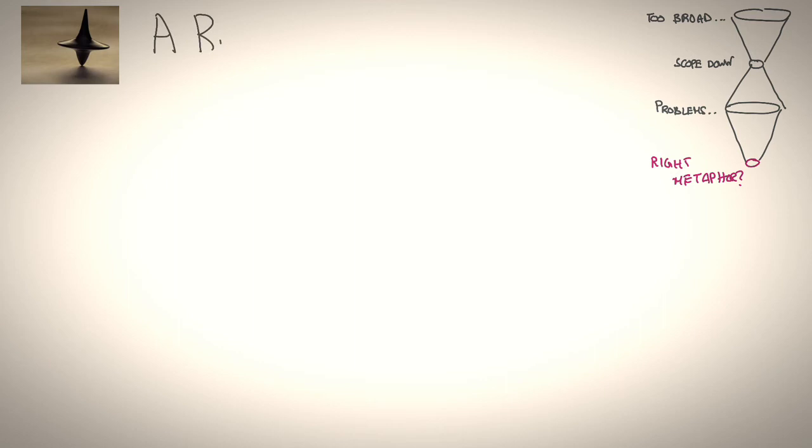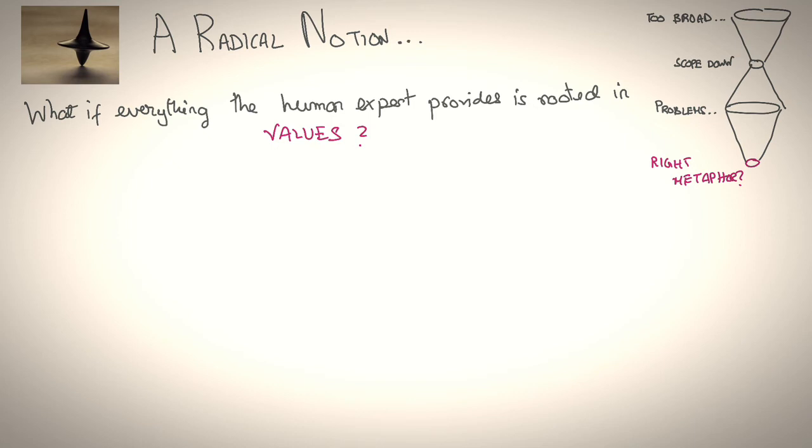Somewhere along the line, researchers in imitation learning came upon a radical notion. They asked the question, what if everything the human expert provides is rooted in their values? In other words, the sum of the cumulative costs that's implicit in their mind.